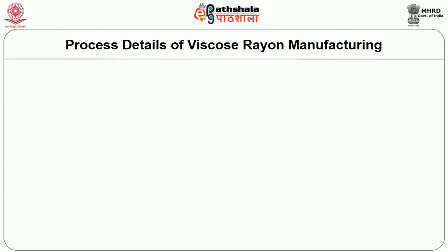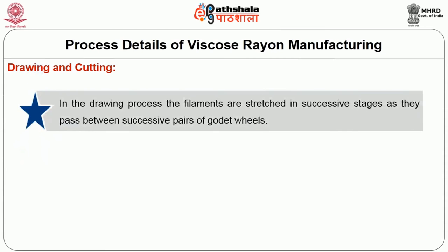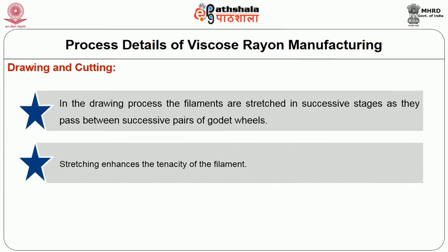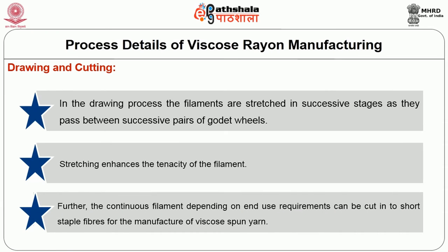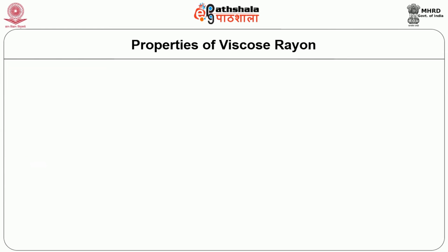Following the spinning process, the fibrous material or filament is taken to the drawing and cutting process. In the drawing process, the filaments are stretched in successive stages as they pass between successive pairs of godet wheels. Stretching enhances the tenacity of the filament. The continuous filament, depending on end-use requirements, can be cut into short staple fibers for the manufacture of viscose-spun yarn.